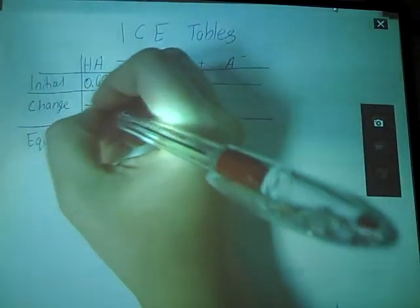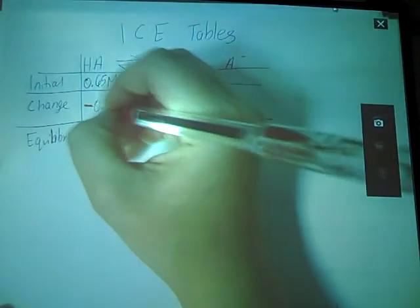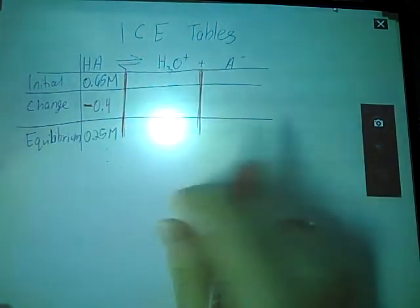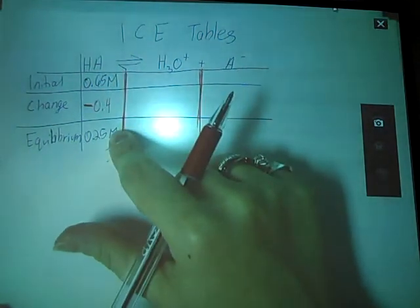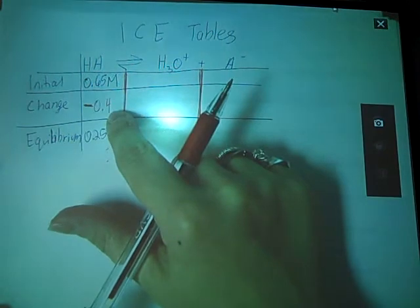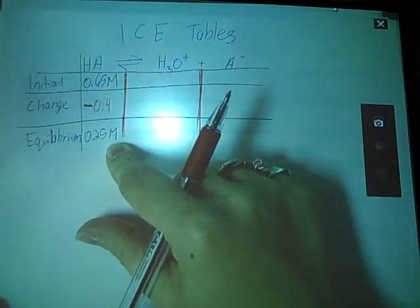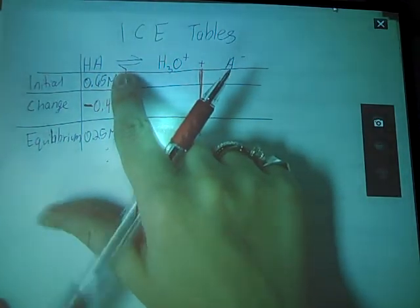So my change was negative. We are going down, but how much looks like 0.4. Hopefully you see how I got that number. I just subtracted these two. So if I take 0.4 and I subtract it from 0.65, I get 0.25. So we have changed 0.4 between here and here.